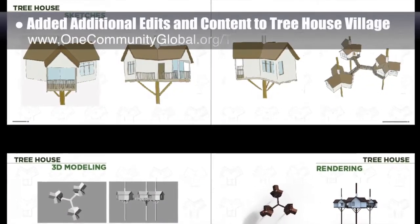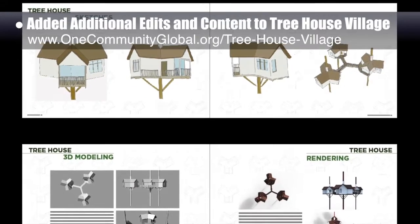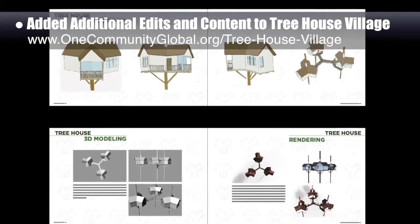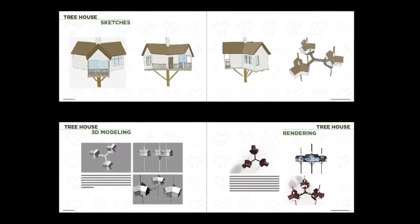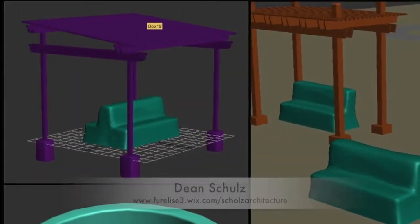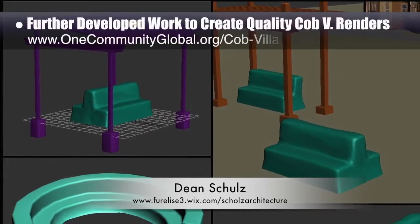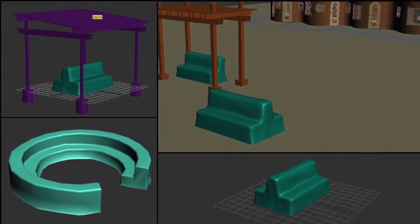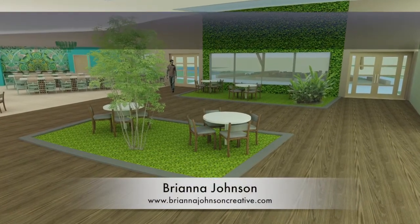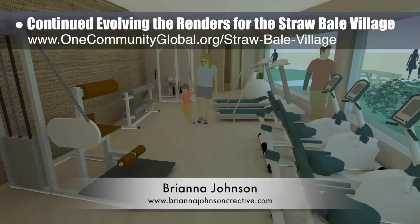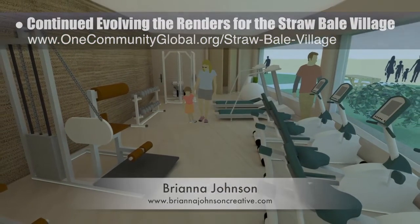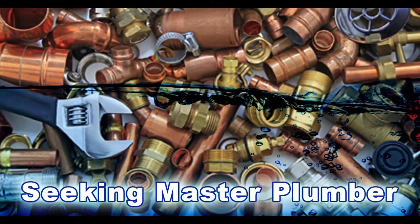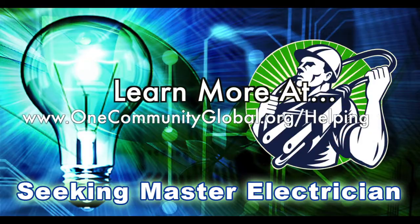Also behind the scenes, we added an additional 7% of edits and content to the Treehouse Village Pod 7 presentation begun by the intern team over the summer, including rewriting text in the final few sections, final formatting, and last revisions — bringing us to 99% finished, with the presentation soon to be added to the site. Dean Schulz, architectural designer, further developed what's necessary for Cobb Village Pod 3 renders, with update 8.0 focused on Cobb bench designs. Breanna Johnson, interior designer, continued evolving renders for Straw Bale Village Pod 2, including initial test renders of the dining area looking north and the exercise facility.